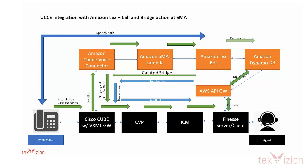At the Finesse agent, there is a database query that is sent to the AWS API Gateway, which fetches whatever information the PSTN caller provided to the bot.